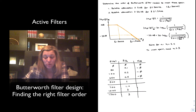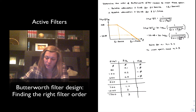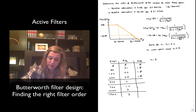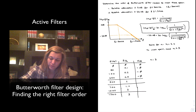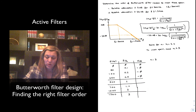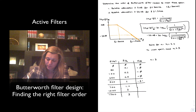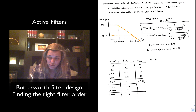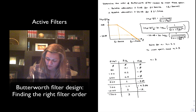At 500 Hz, where f over fc equals exactly 1, the expression becomes 20 times log base 10 of 1 over the square root of 1 plus 1 to the power of 2 times 3 — which is to the power of 6 — giving 1 over the square root of 2, which is exactly negative 3 dB. For the other values, I calculated approximately negative 9.3 dB, negative 18.1 dB, and negative 28 dB at 1500 Hz.